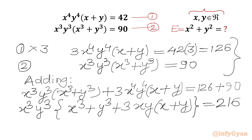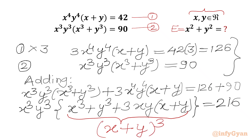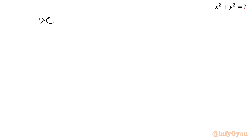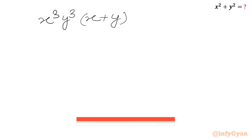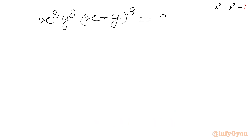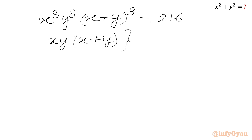Now we know the algebraic formula: x³+y³+3xy·(x+y) equals (x+y)³. So here we can write (x+y)³. Therefore, the LHS becomes x³y³·(x+y)³ = 216. We can also write this as [xy·(x+y)]³ = 216.